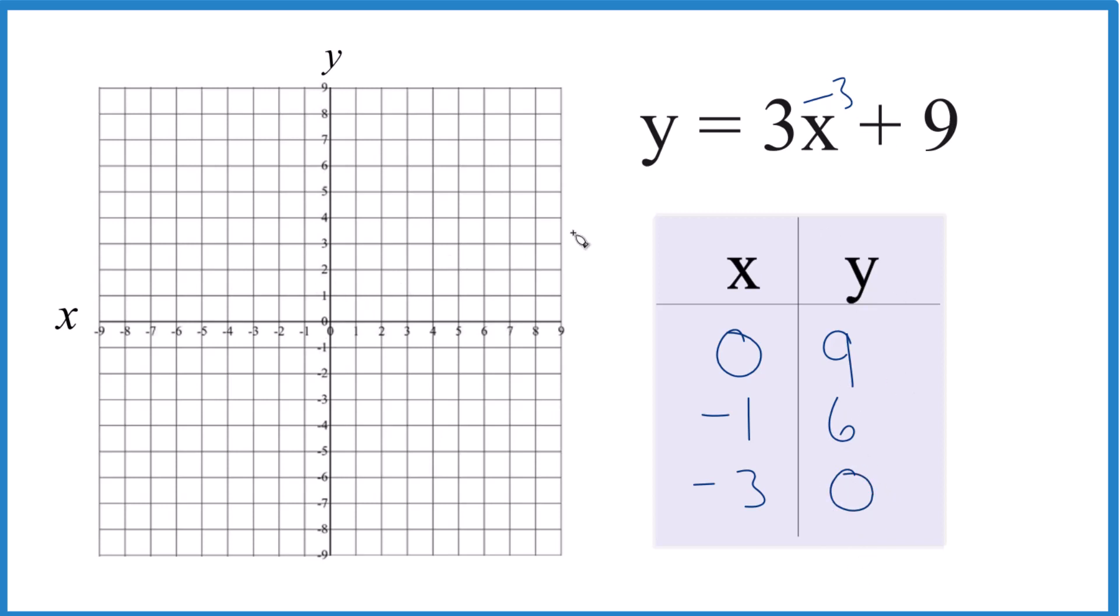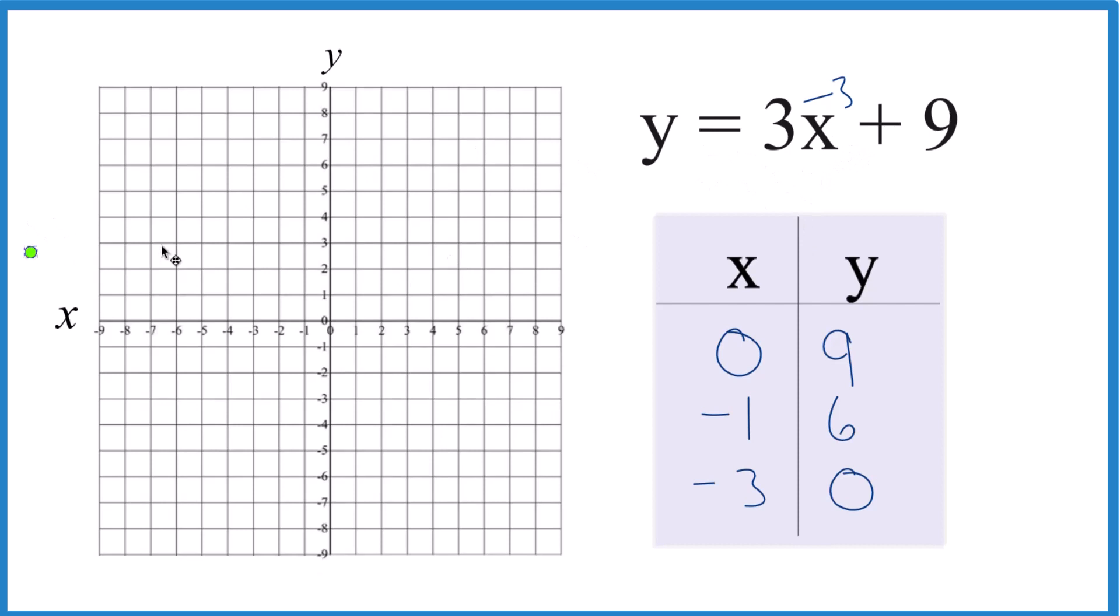So we'll graph these points here for y equals 3x plus 9. So the first point is x is 0, y is 9. Here's x is 0, and here's y is 9. Almost off our paper.